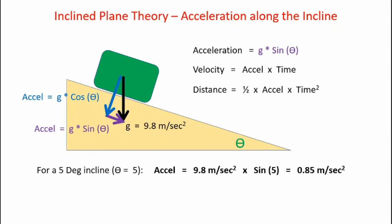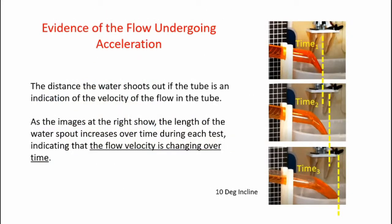For a five degree incline, acceleration equals 9.8 meters per second squared times sine of five degrees, which equals 0.85 meters per second squared. By applying some algebra to the distance equation, we can calculate how long it takes that slug to move down the incline. Time equals the square root of two times the distance moved divided by the acceleration.